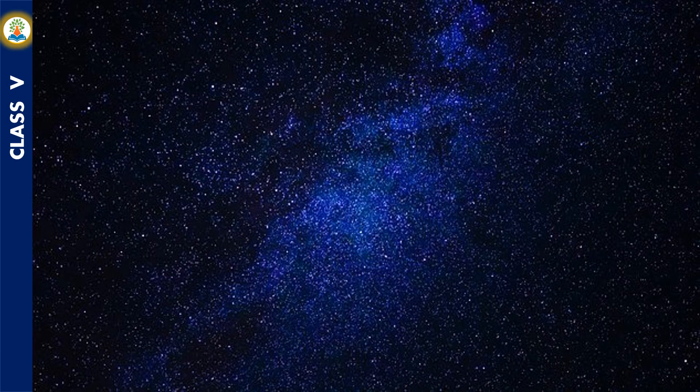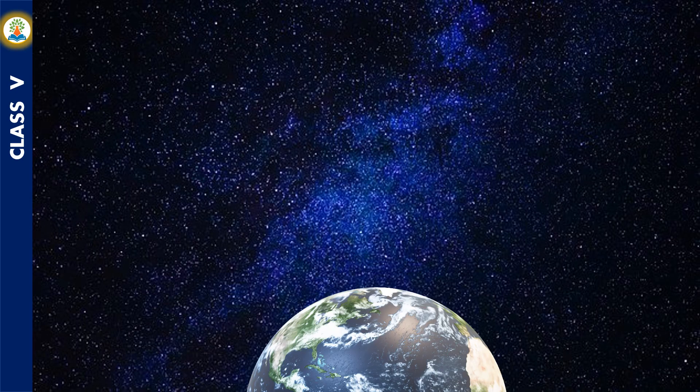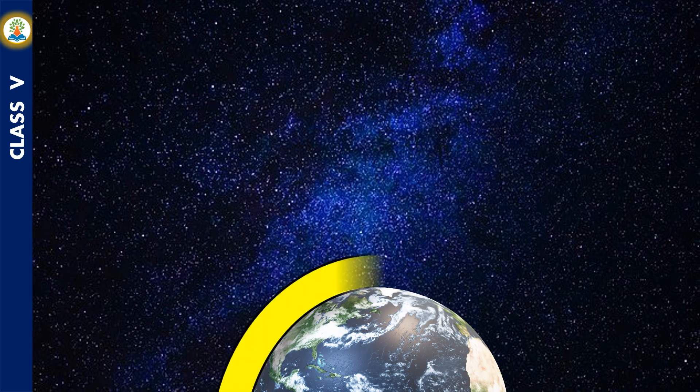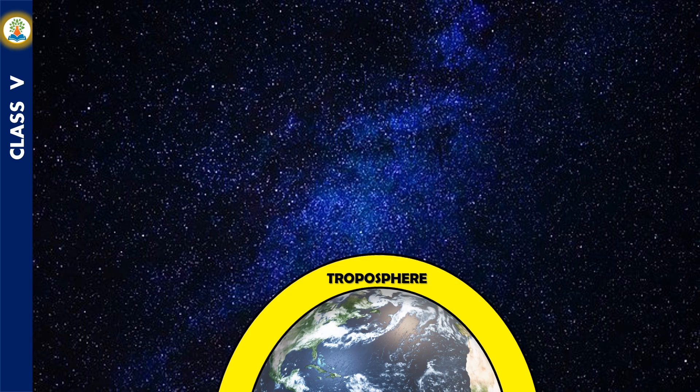Layers of Earth's atmosphere are divided into five different layers. The troposphere is the lowest layer of Earth's atmosphere, starting at the surface and going up to a height of 7 to 20 kilometers. All the weather and climatic conditions occur within this layer. This layer has water vapor and moisture particles. Temperature decreases at the rate of one degree Celsius for every 165 meters of height.